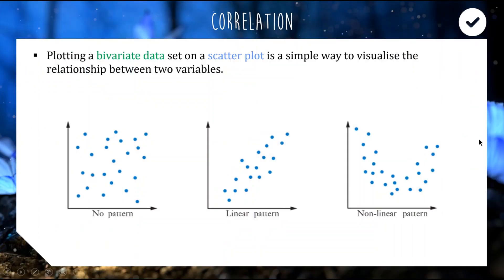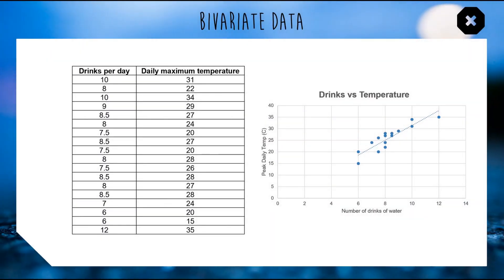What we were seeing there is called a correlation — a relationship between two variables where an increase in one increases the other, or vice versa, increasing one decreases the other. When you have bivariate data, the easiest way to see if you have a correlation is to create a scatter plot: plot your data as coordinates and look for a trend.